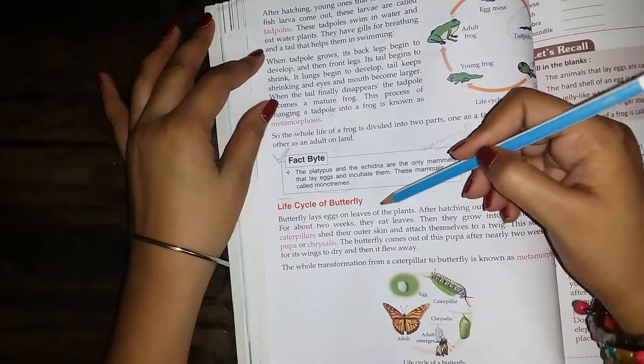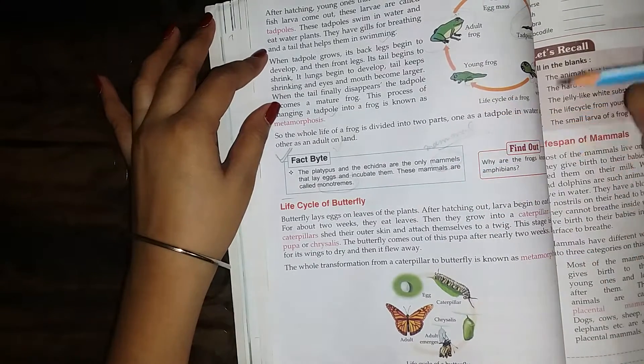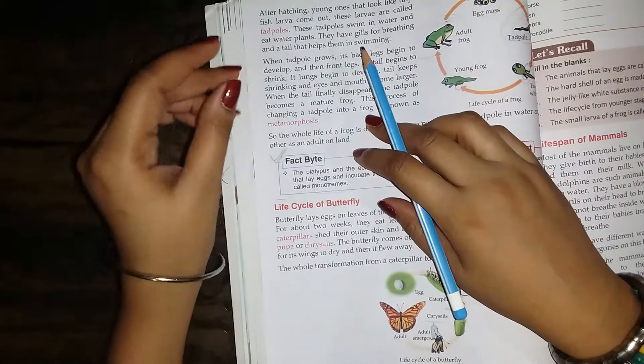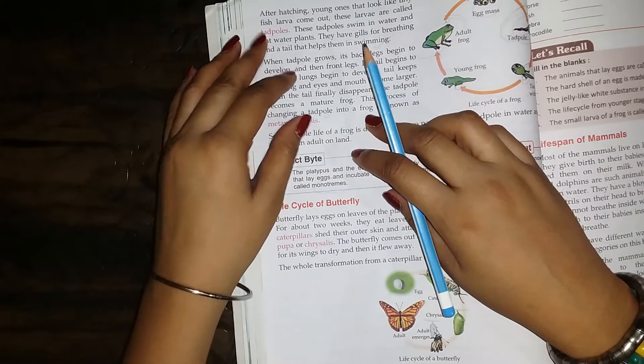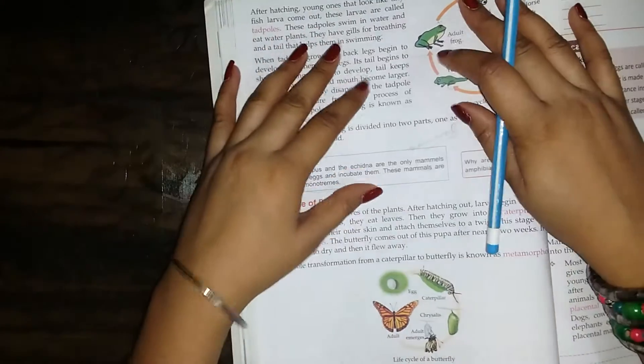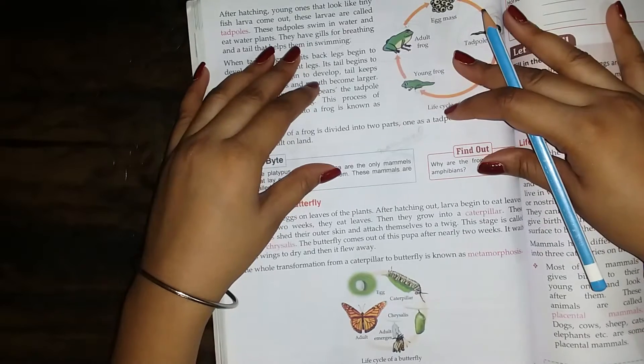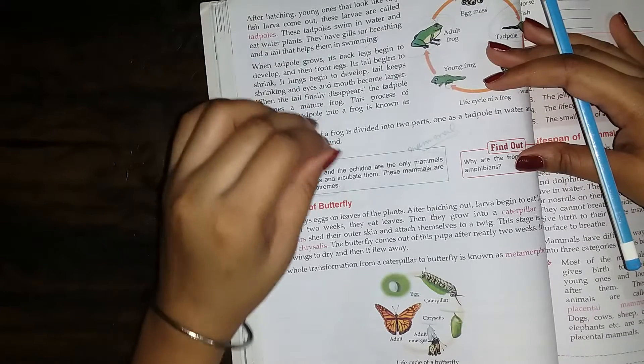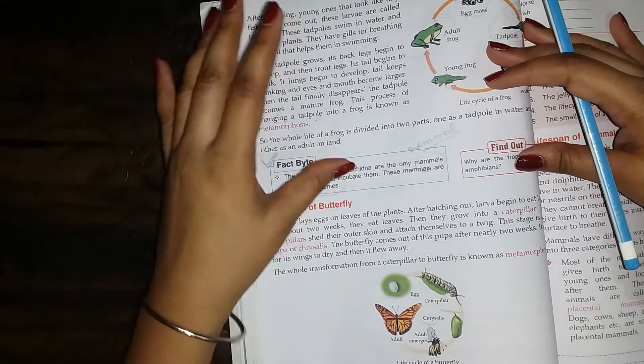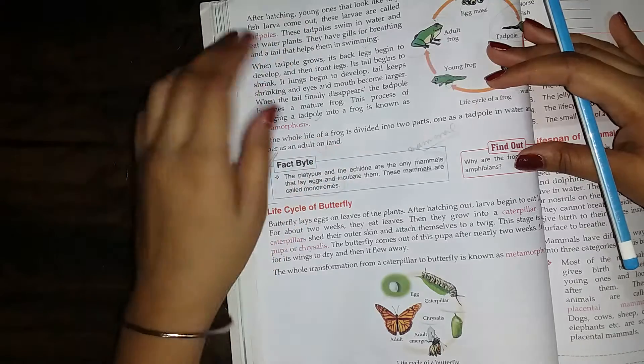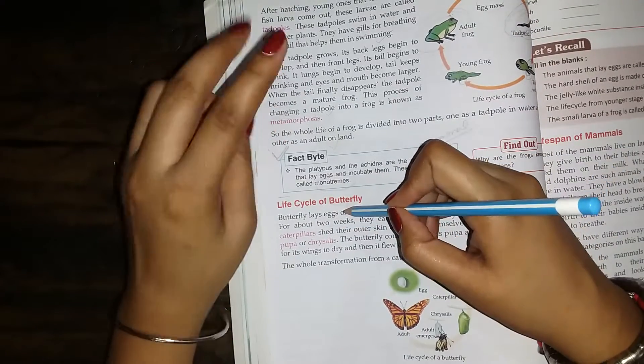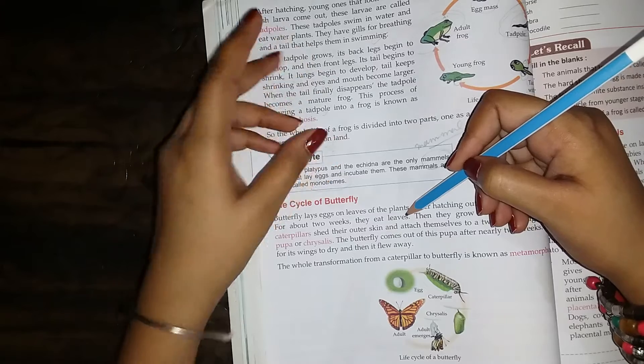Butterfly lay eggs on leaves of plants. We know that the butterfly is on plants. After hatching out, larvae begin to eat leaves. They eat leaves.